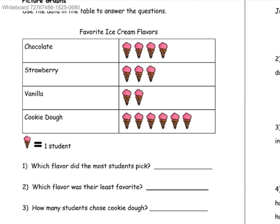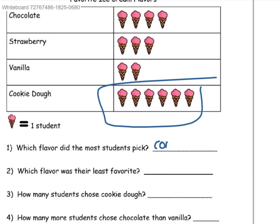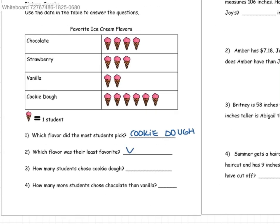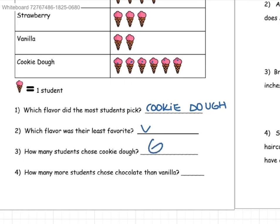Which flavor did the most students pick? We can see that because one ice cream is equal to one student, the one with the most votes would be cookie dough. Which flavor was the least favorite? So that would be vanilla. And how many students chose cookie dough? That would be one, two, three, four, five, six. Six students chose cookie dough.